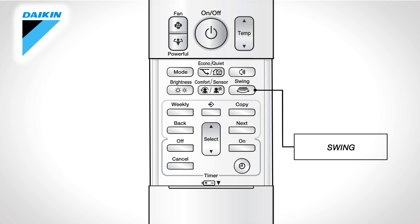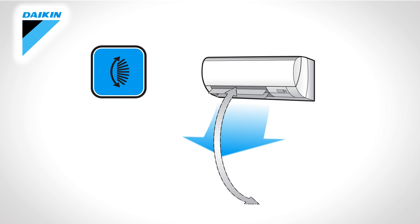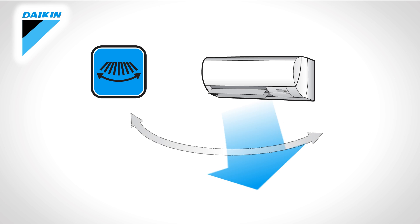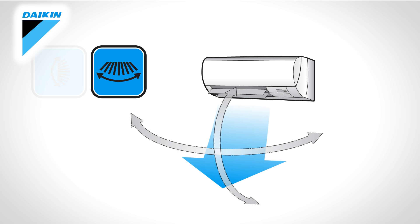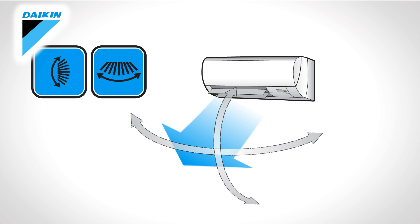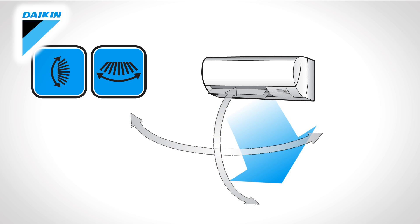Swing: Press the button for adjusting the airflow direction. This button controls upper and lower airflow direction. This button adjusts the direction to the left or to the right. Press both buttons simultaneously for a combination of directions. Press both buttons again when the flaps have reached the desired position.